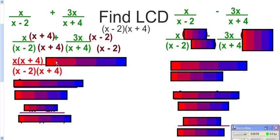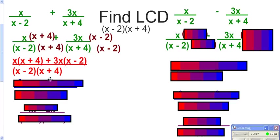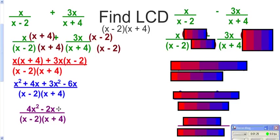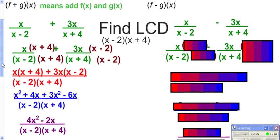Then we'll have x times x plus 4, plus 3x times x minus 2, all over the common denominator. We're going to leave the bottom alone and eliminate the parentheses on top, then combine like terms. You'd always want to check if there are any common factors in the top and the bottom. We could pull out a common factor of 2x from the top, but it won't leave any common factors with the bottom, so you leave it — it won't reduce.